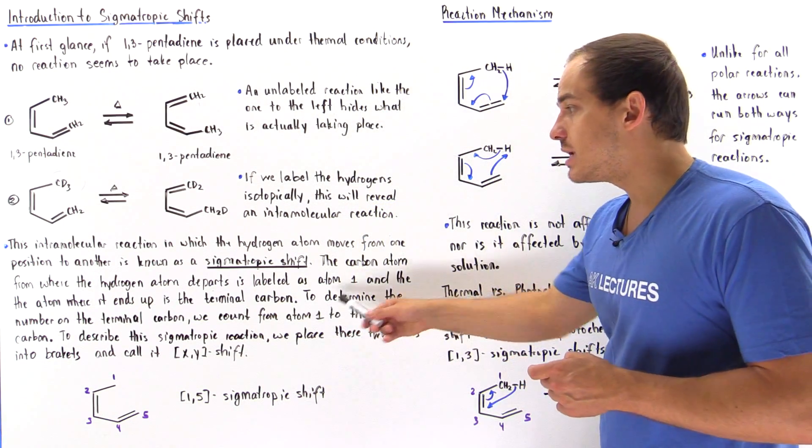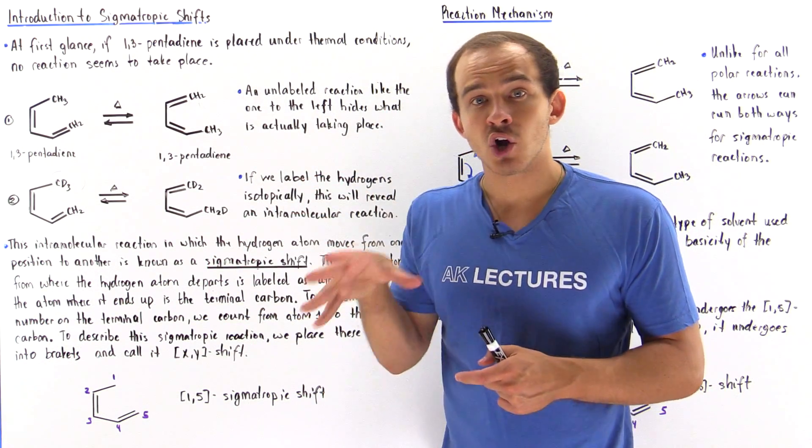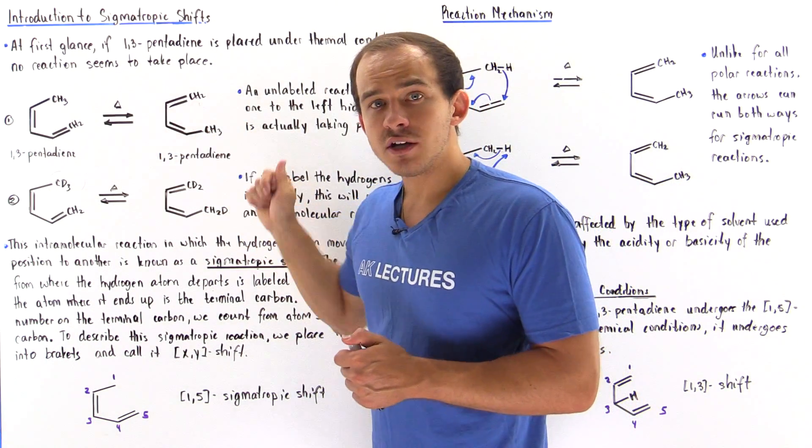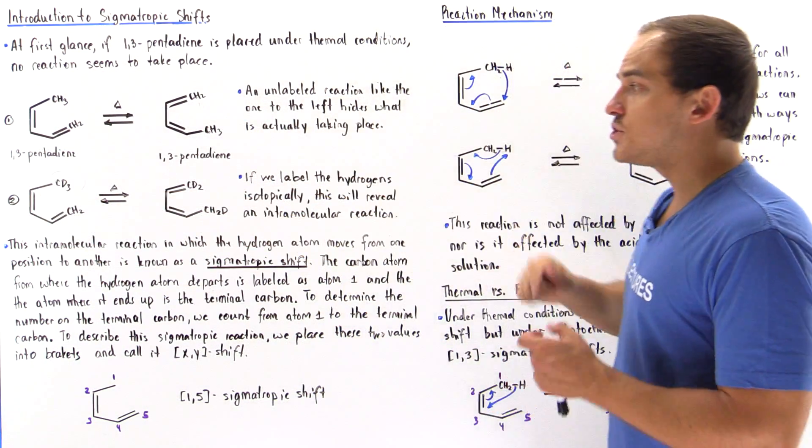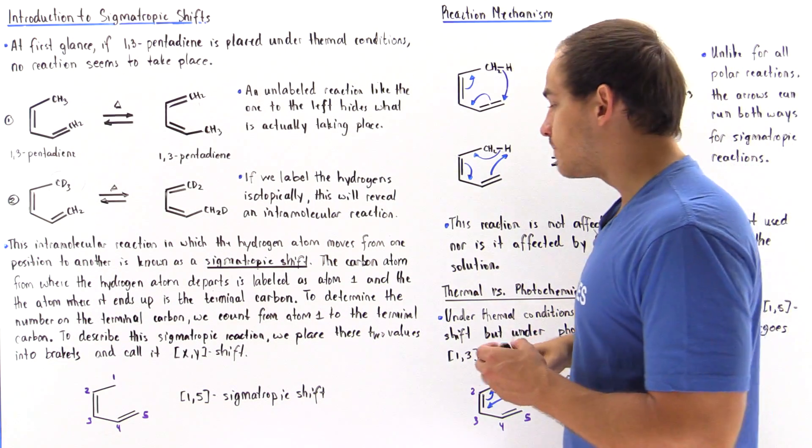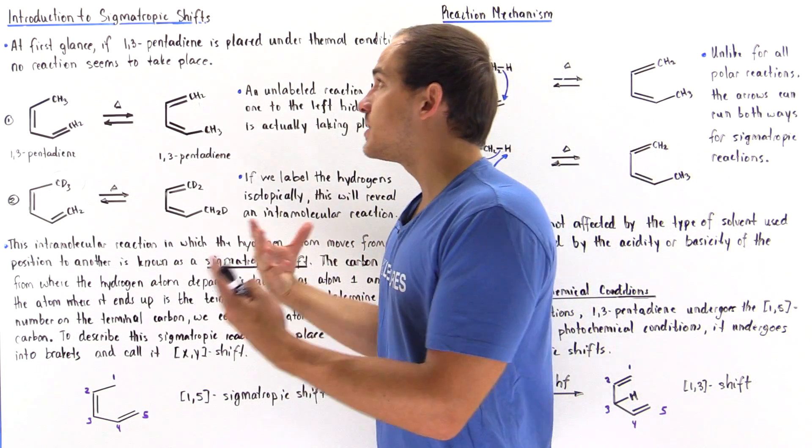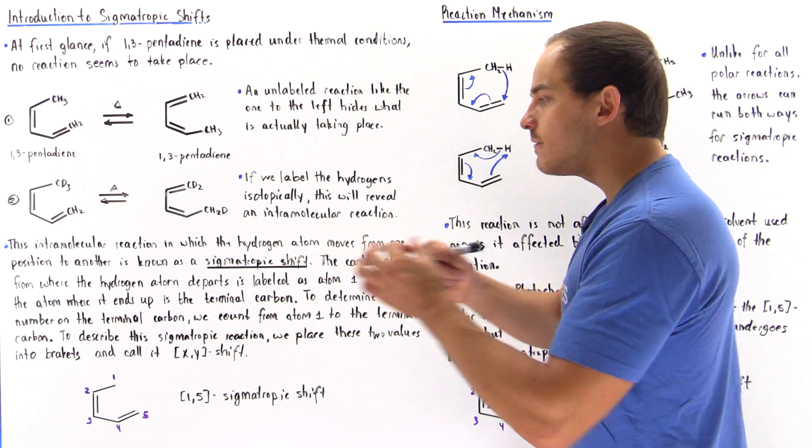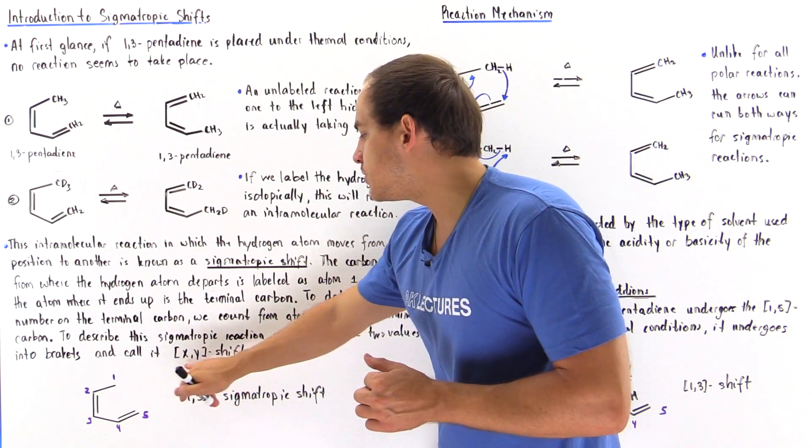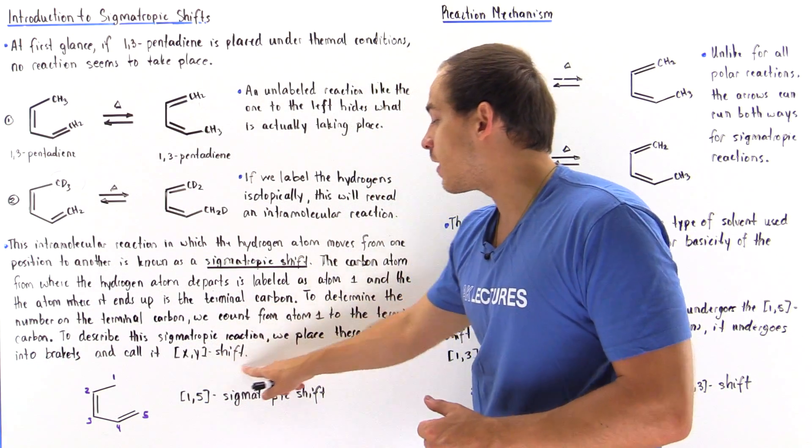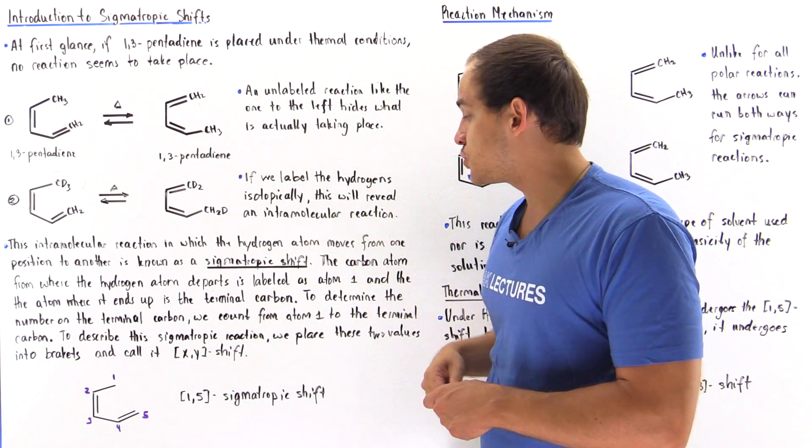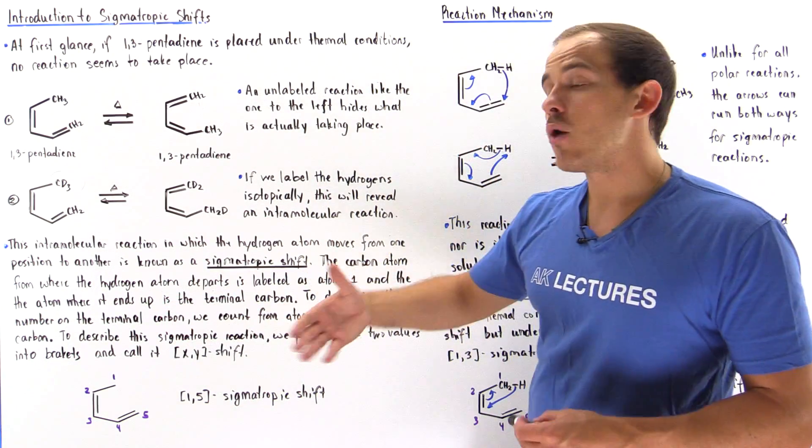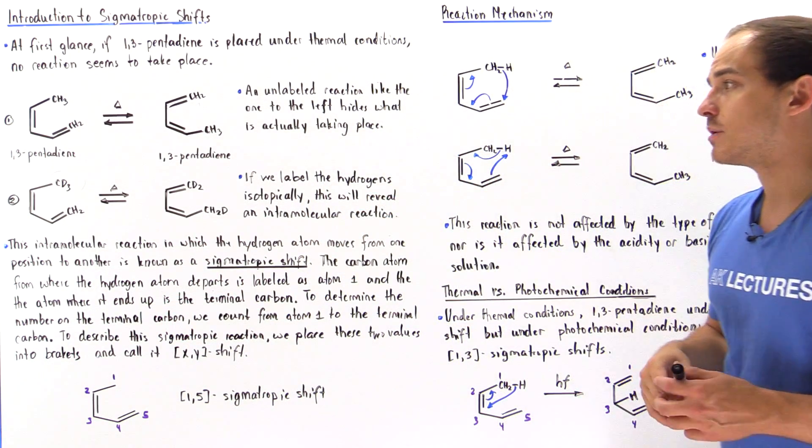And to determine the position, the number on the terminal carbon, we simply begin counting with our starting carbon and go all the way up to our terminal carbon. And to designate this particular sigmatropic reaction, we use those two values. We take the values, we place them into a bracket, and we place that in front of our sigmatropic shift. So X basically means the starting carbon and Y means our final carbon, the terminal carbon.